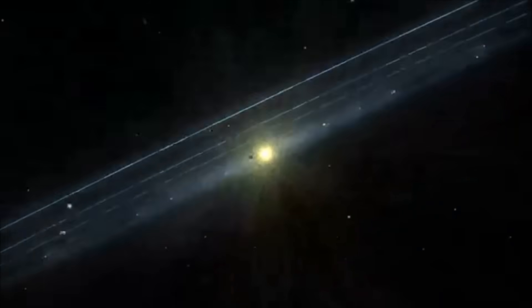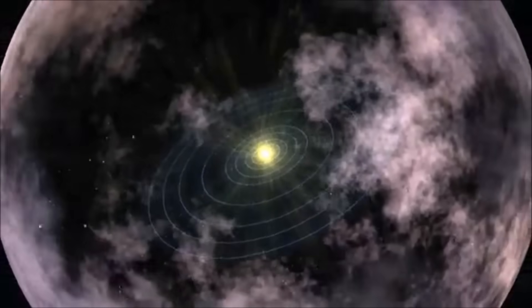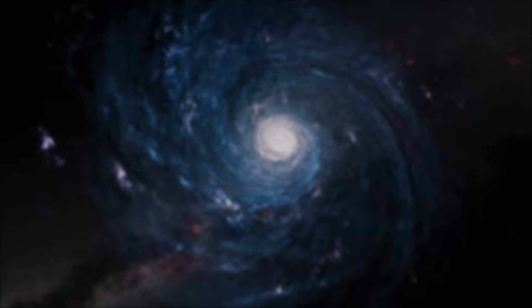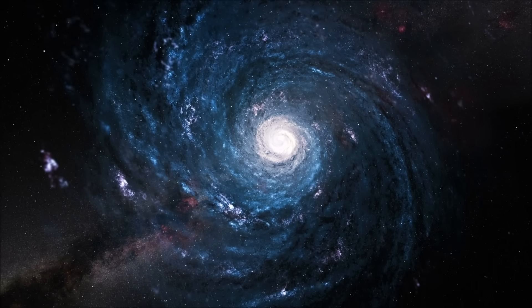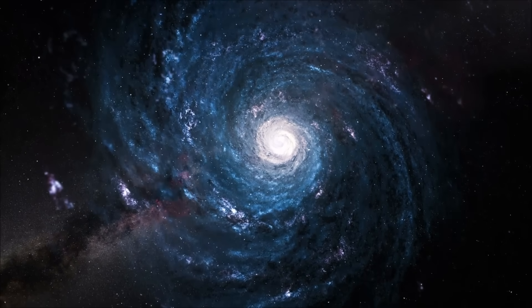All of the planets in the solar system, including the earth, orbit around the sun. In turn, the solar system orbits around the center of the galaxy in which we live, the Milky Way.